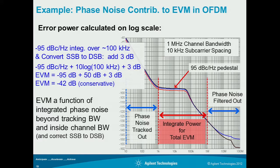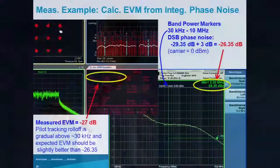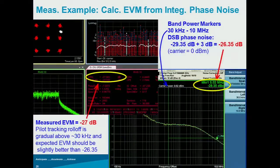If you do the math, the example calculation ends up being minus 42 dB. We have another example — wireless LAN. Following that same equation: wireless LAN has about a 312 kilohertz spacing between the OFDM carriers.